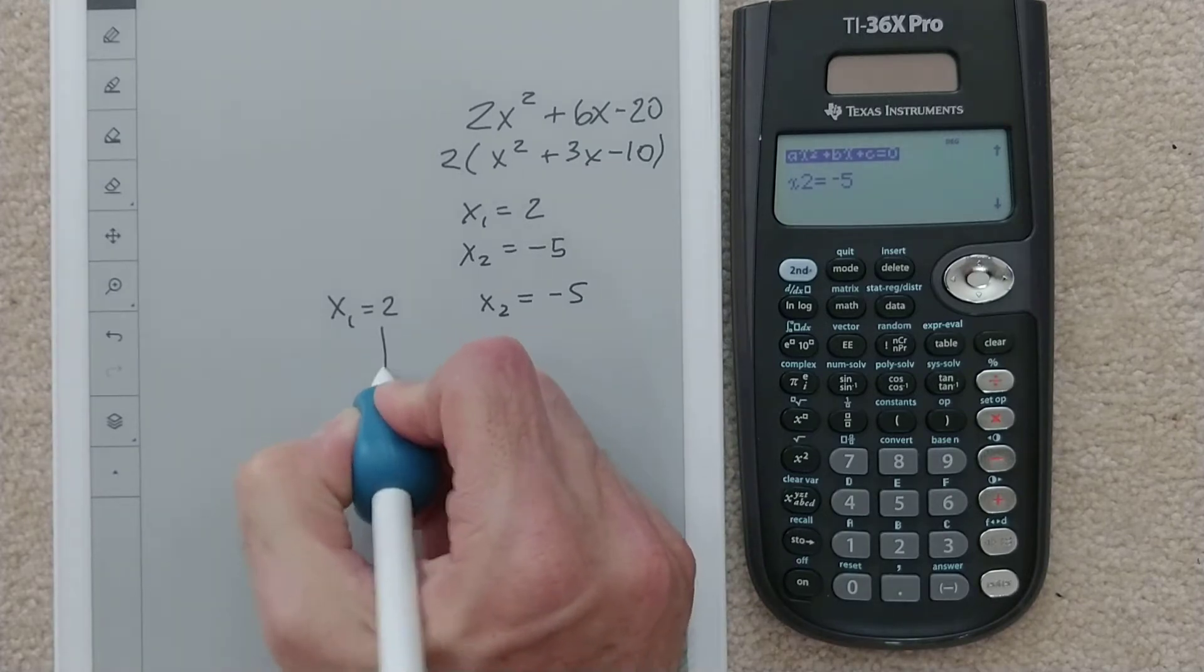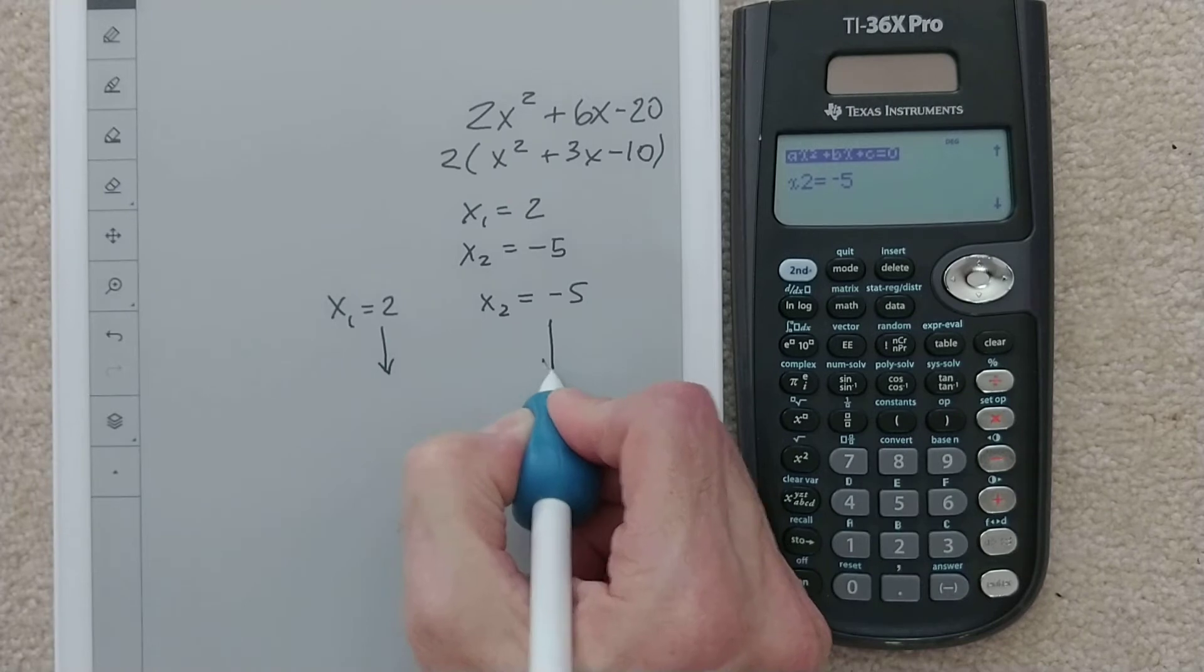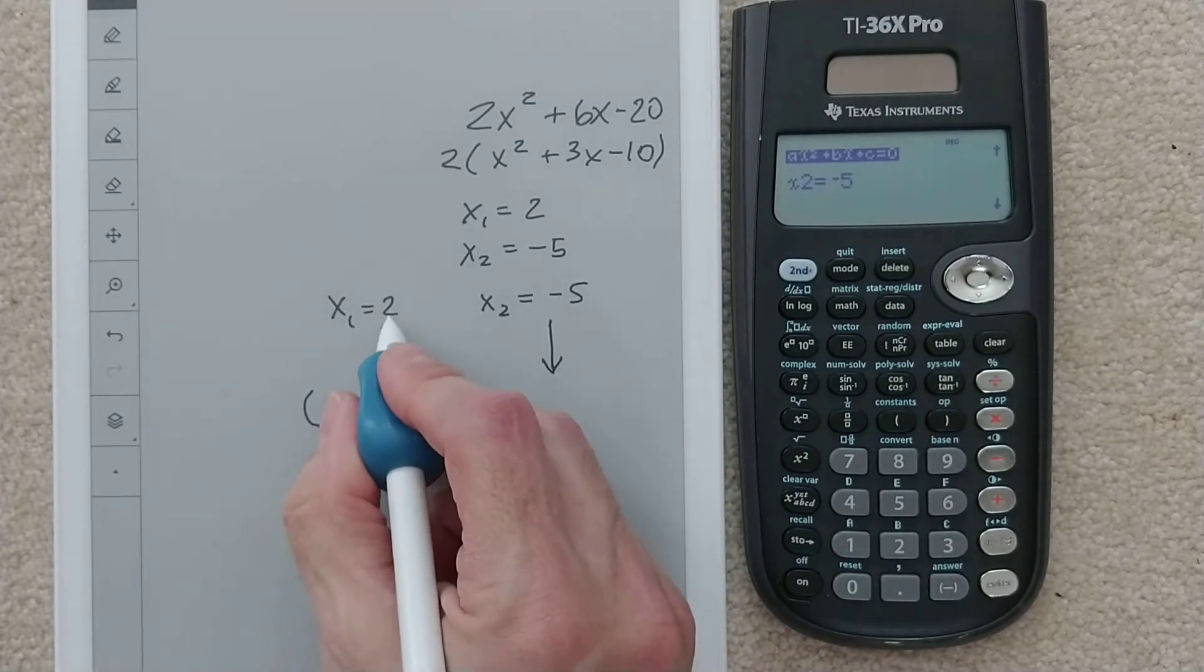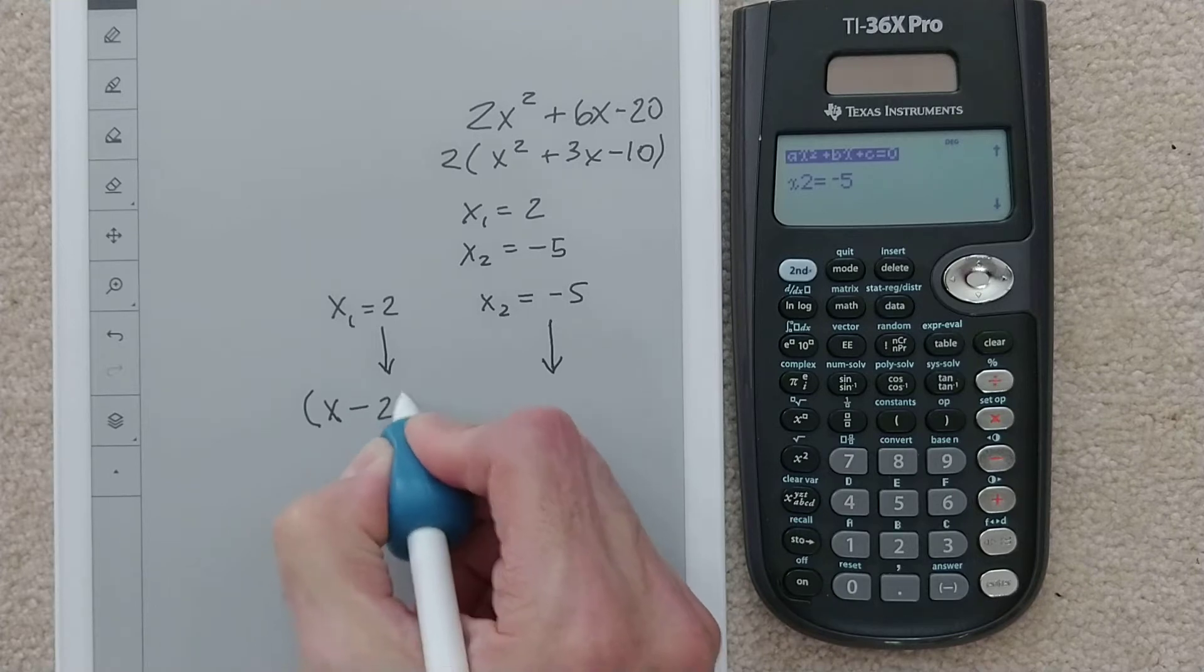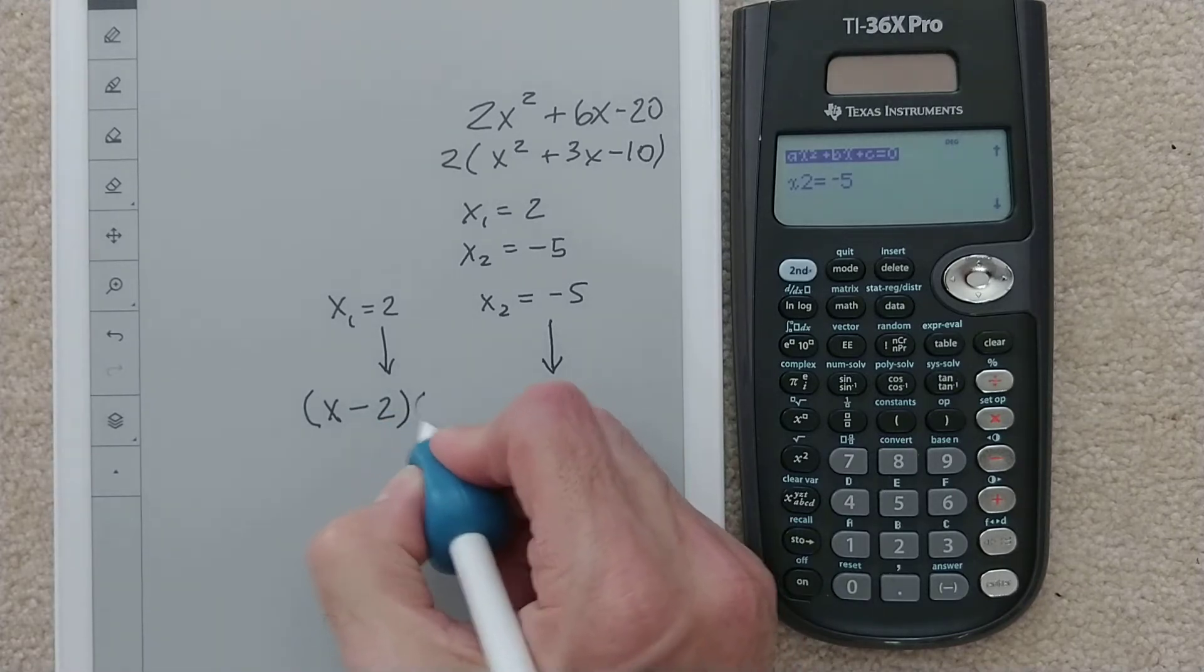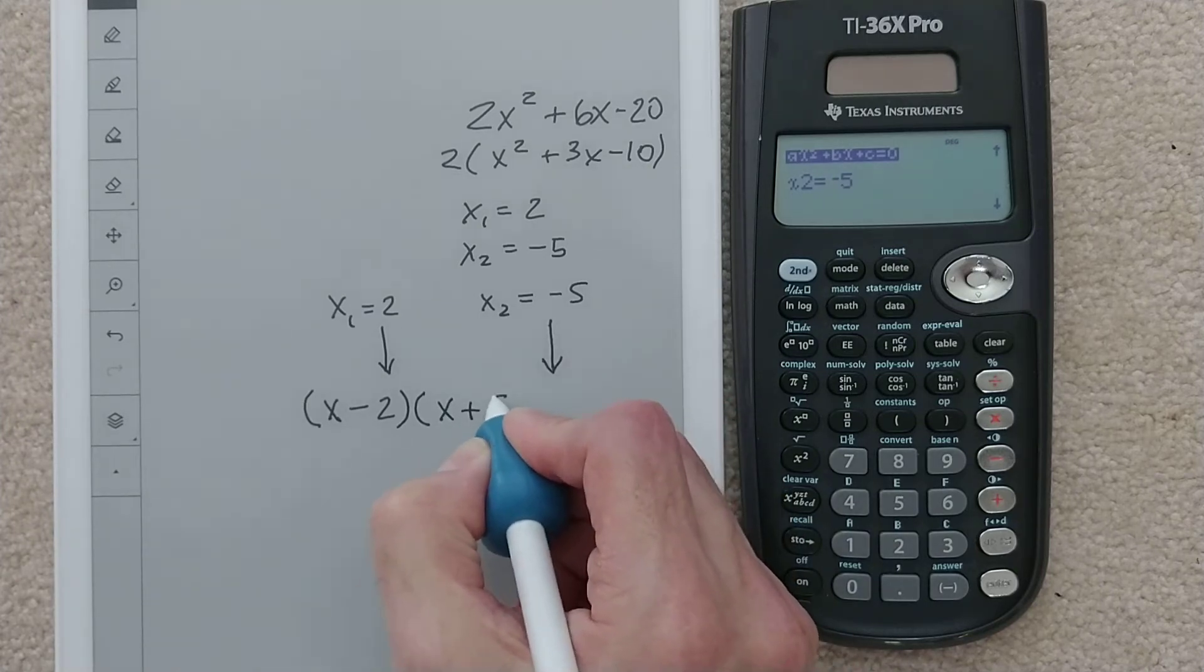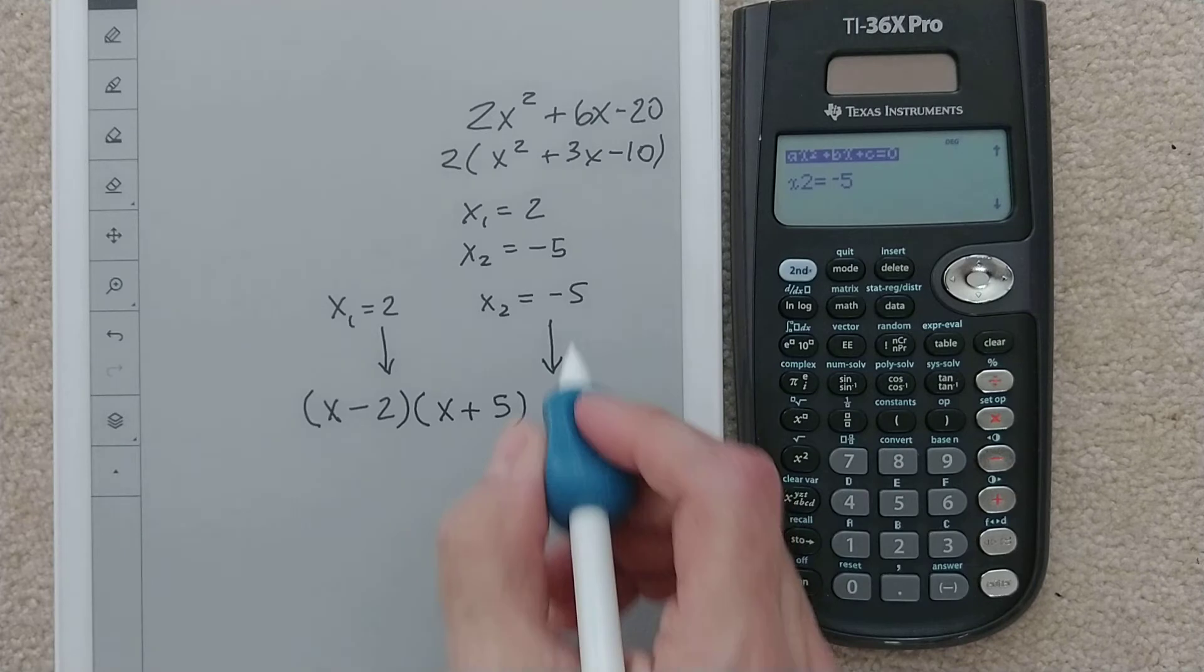To turn that into a factor, all we need to do is reverse the sign. Do x, and then reverse the sign. So not positive 2, we're going to do negative 2. One of our factors is x minus 2, and our other factor is x plus 5.